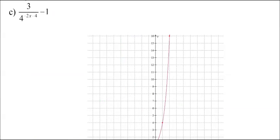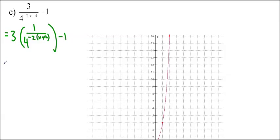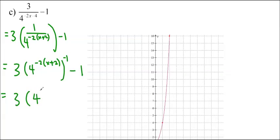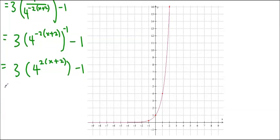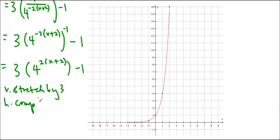Last transformation example: 3 over 4 to the (negative 2x minus 4) minus 1. We simplify this first — it equals 3 times (1 over 4) to the (negative 2 times (x plus 2)), minus 1. Since 1 over 4 equals 4 to the negative 1, using the power rule this becomes 3 times 4 to the (negative 2x minus 2) plus 2 minus 1. Now the transformations are clear: vertical stretch by 3, horizontal compression by one-half, left 2, and down 1.